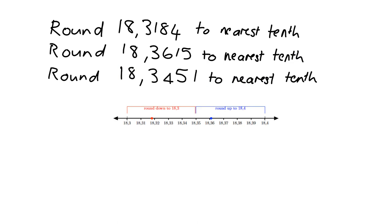Let's round to the nearest tenth now. We've got 18.3184 and we want to round to the nearest tenth. So the first thing — this is the tenths digit. We know that this number lies somewhere between 18.3, which is the tenth below it, and 18.4, which is the tenth above it.